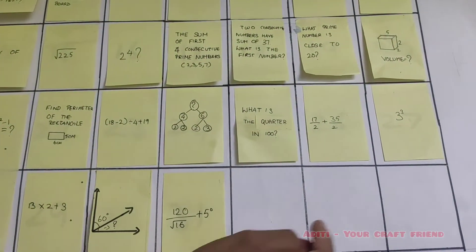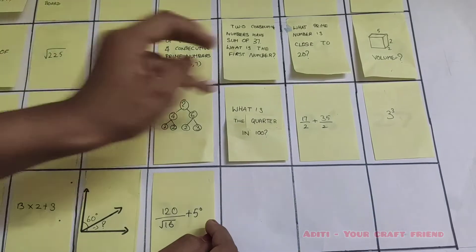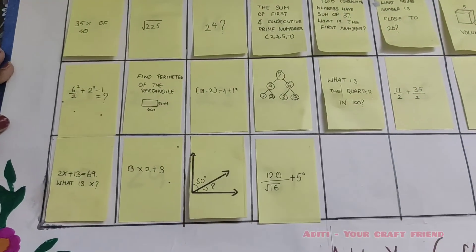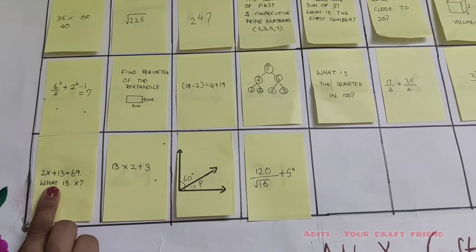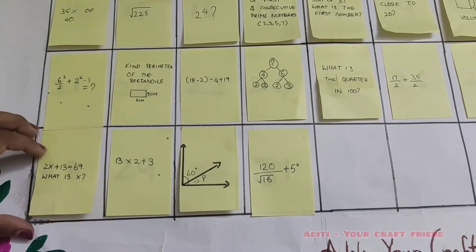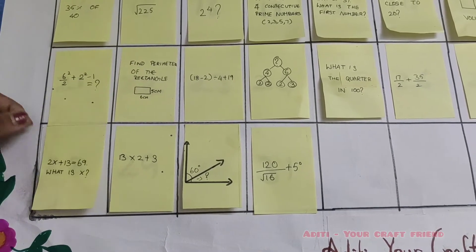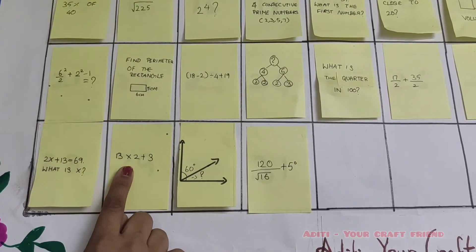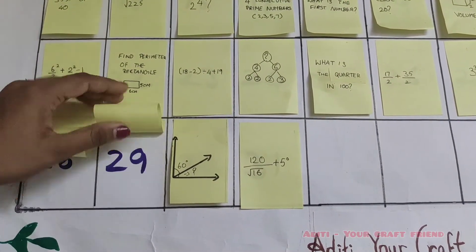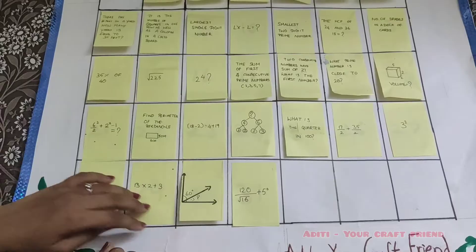3 cubed. It's 27. 2x plus 13 is equal to 69. What is the value of this x? It's 28. 13 cross 2 plus 3... 30. What is the value of this x? It's 29.